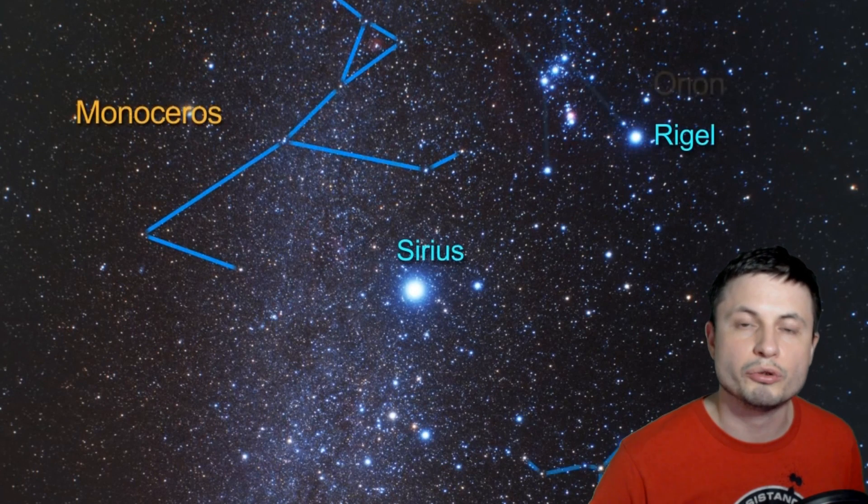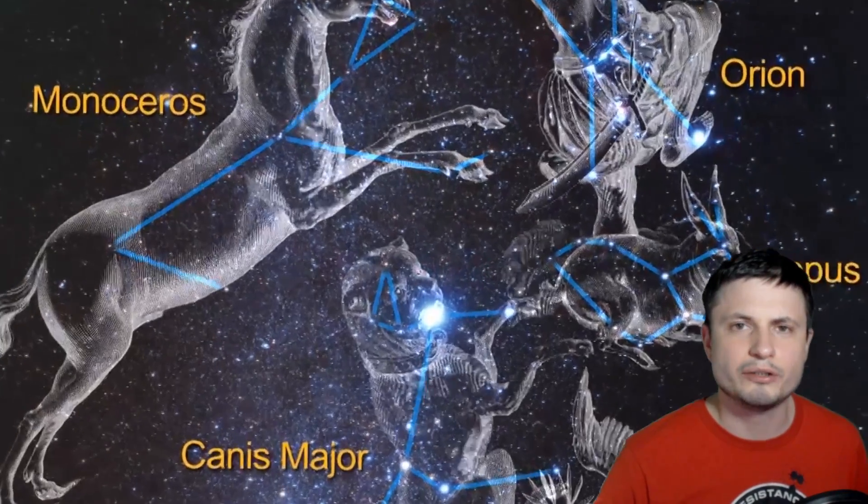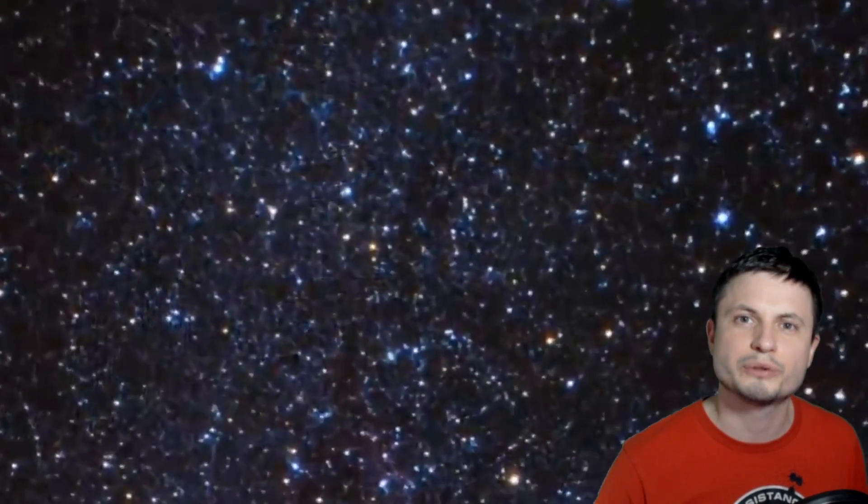And the best and the most recent example of light echoes comes from this region right here, from a somewhat unknown and in some sense not really interesting constellation known as Monoceros.